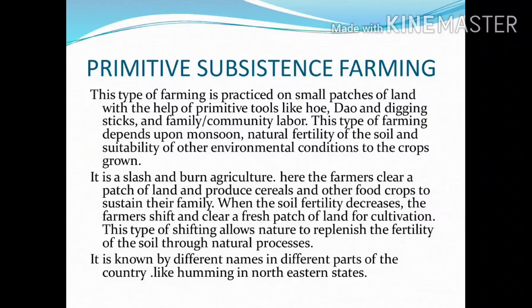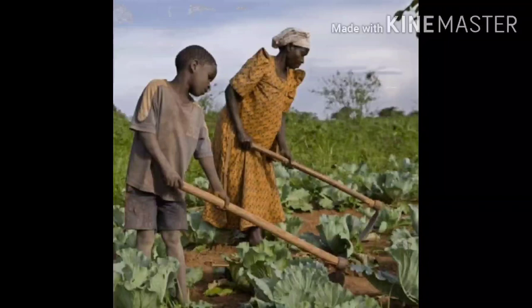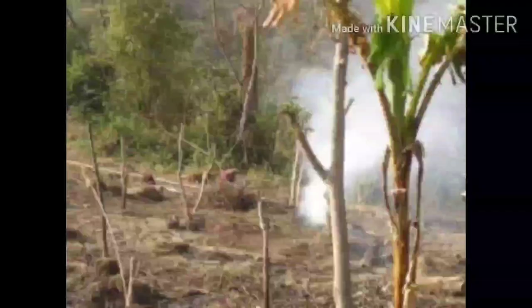The farmer clears a patch of land and produces cereals and other food crops to sustain their family. When the soil fertility decreases, the farmer shifts and clears a fresh patch of land for cultivation. This type of shifting allows nature to replenish the fertility of the soil through natural processes. This is known by different names in different parts of the country, like Jhum in the north-eastern states.